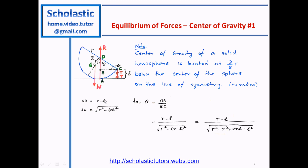We can now find the angle θ. tan θ is given by OB over BC. Substituting OB equal to R minus L, and BC equal to the square root of R squared minus OB squared, we substitute OB which is (R minus L) squared and expand. R squared and R squared cancel off, giving the value for tan θ, which is (R minus L) divided by the square root of 2RL minus L squared.